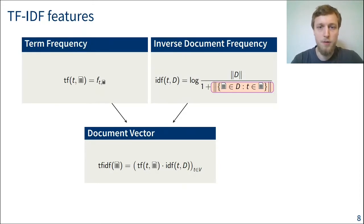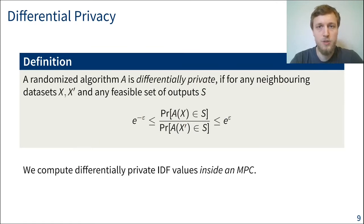As you might already see here, the only part of this TF-IDF feature representation that depends on data from more than one party is the denominator in the IDF definition. So here we want to compute the number of documents that contain a certain term, and for that we have to look at the entire database. What we're going to do is reveal that count in a differentially private manner. So let's have a quick recap what we mean by differential privacy. We say that an algorithm is differentially private if the output doesn't change too much whether we add or remove a single element in the input set. So more formally, the probability of observing a certain outcome should change only by a factor of e to the epsilon, where epsilon is called the privacy budget. So our goal is to perform a two-party computation between the two servers and reveal differentially private IDF values at the end of that.